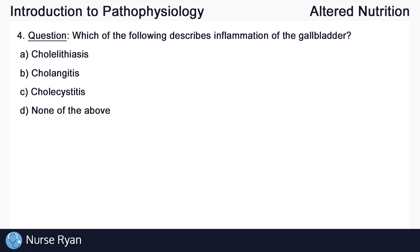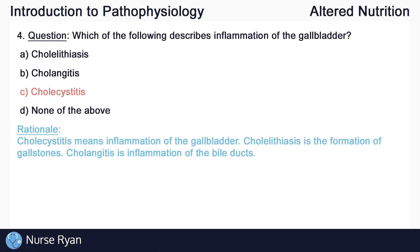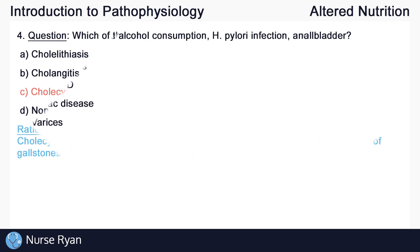Question number four: which of the following describes inflammation of the gallbladder? The answer is C, cholecystitis. Cholecystitis means inflammation of the gallbladder. Chololithiasis is the formation of gallstones, and cholangitis is the inflammation of the bile ducts.